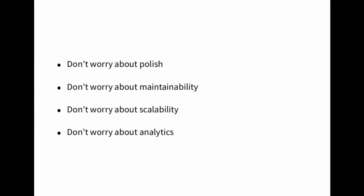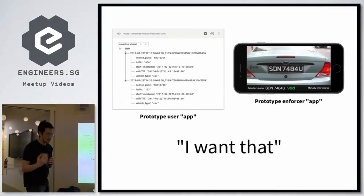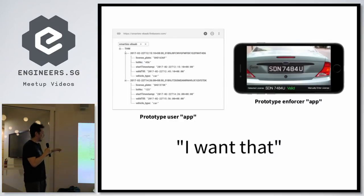At this stage you're not worried about polish or maintainability. What you're trying to do is bridge the gap between your imagination and the person you're trying to convince. You just had an idea, you spent a bunch of time thinking about it, and you need to convince a stakeholder or your boss. You're not trying to build your completed magnum opus — you're just trying to get that seed of a thought in your head into that person's head. You're trying to get it to the stage where they can point to it and say, 'I don't have the words to describe it and I don't quite know what it is, but I want that thing.'